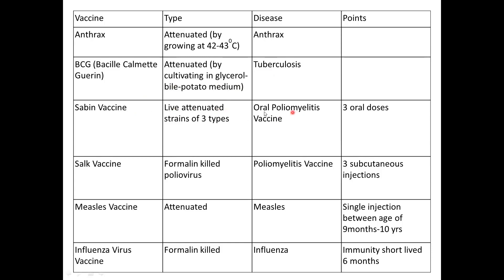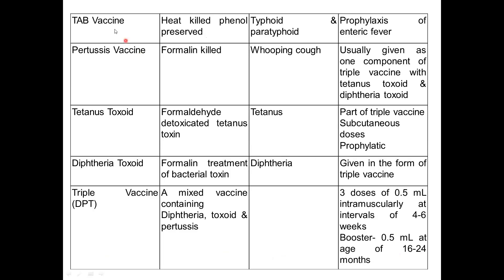The Salk vaccine is the injectable killed polio vaccine that uses formalin to inactivate the poliovirus. The measles vaccine is attenuated and given as a single injection to children between 9 months and 10 years of age. The influenza virus vaccine is formalin-killed (inactivated) and effective against influenza, but immunity is very short-lived — only six months — because this virus mutates frequently. The TAB vaccine is a heat-killed vaccine effective against typhoid and paratyphoid.